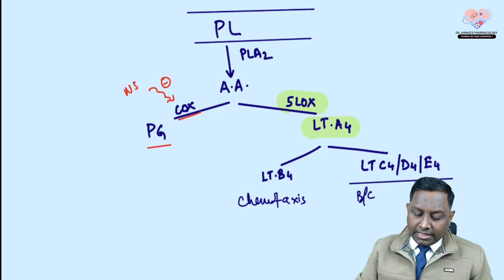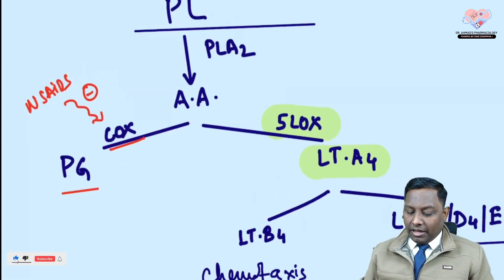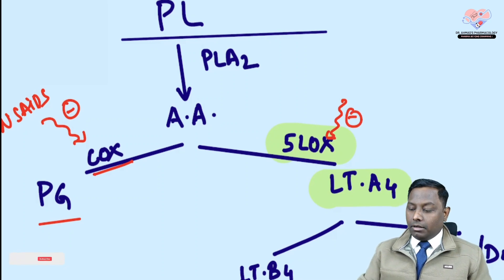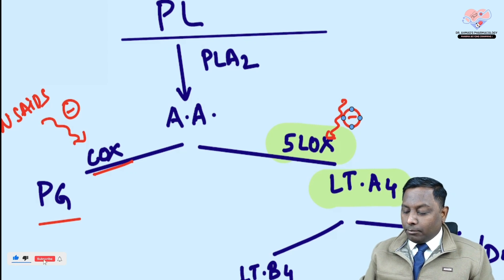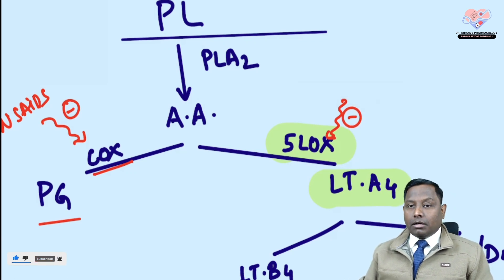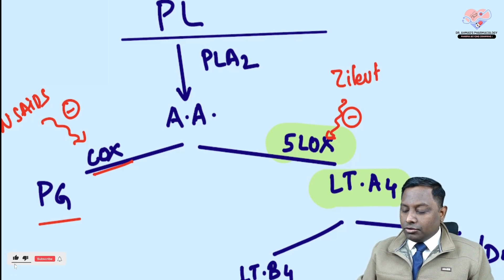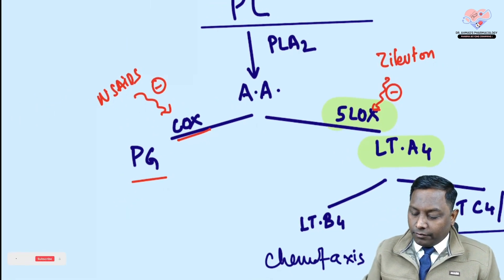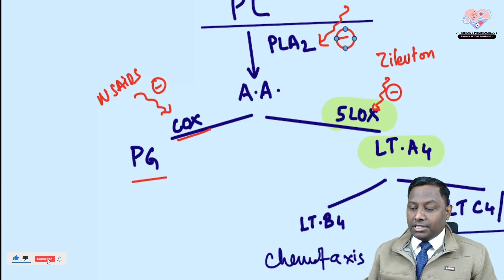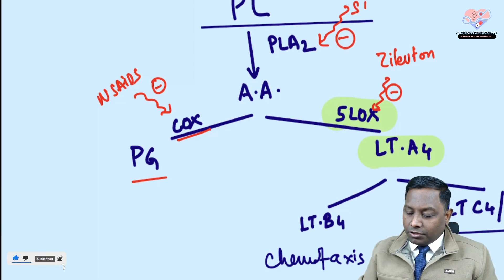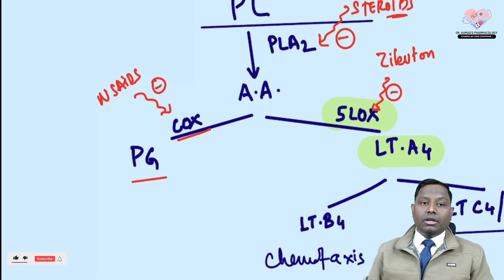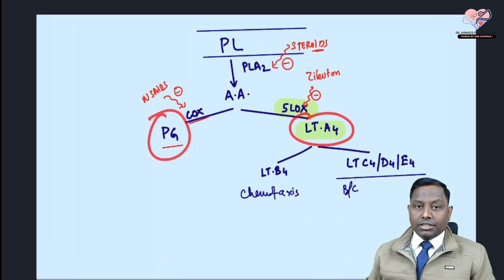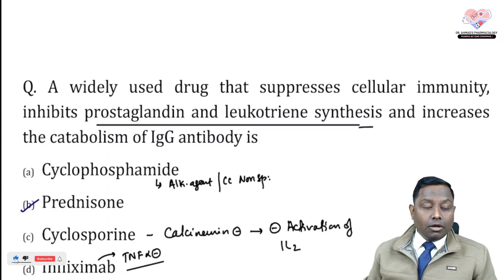To inhibit COX, you can use NSAIDs as COX inhibitors. For LOX inhibition, there's zileuton — the 5-LOX inhibitor. If you want to cut upstream at phospholipase A2, steroids like prednisolone inhibit phospholipase A2, which means they inhibit both prostaglandin and leukotriene formation. So prednisolone is the correct answer — steroids inhibit both pathways.